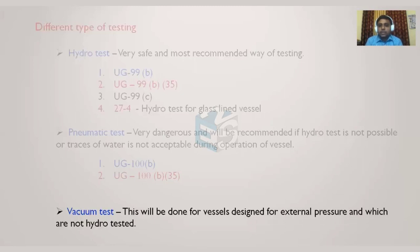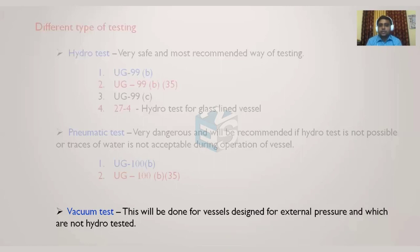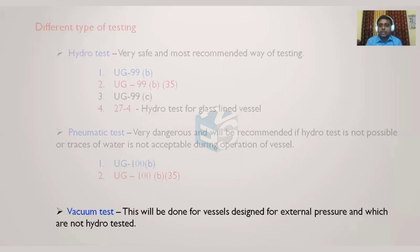For vessels under external pressure, a vacuum test may be considered. According to UG-99(f), clause F1 states that if there is a full vacuum, the pressure vessel can be tested at 1.3 times the vacuum pressure applied as internal pressure — so a hydrostatic test at 1.3 times the external pressure can be performed.